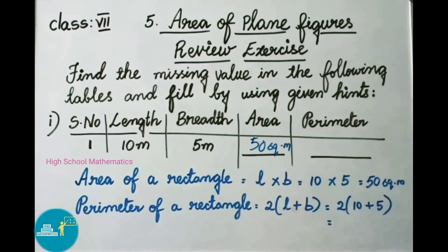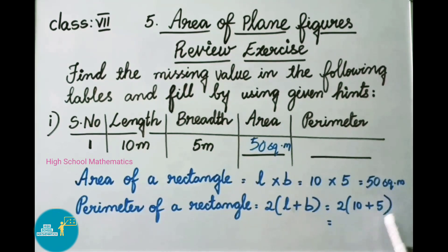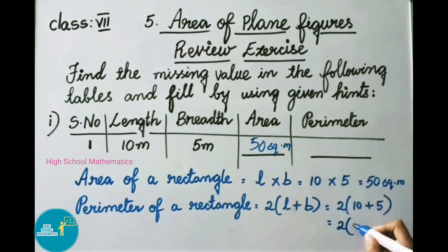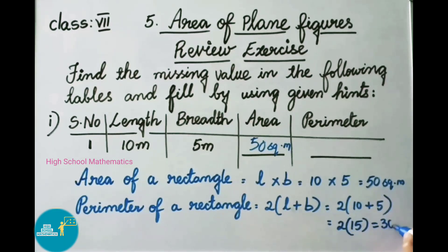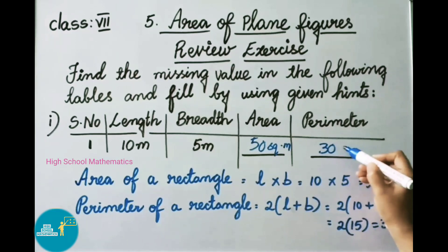Now let us find the perimeter of a rectangle. We know the formula: 2 × (length + breadth). That equals 2 × (10 + 5) = 2 × 15 = 30 meters. So the perimeter of the rectangle is 30 meters.